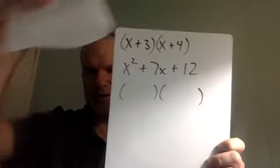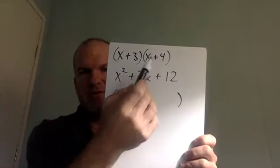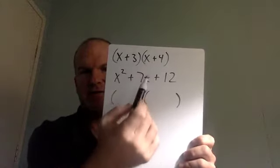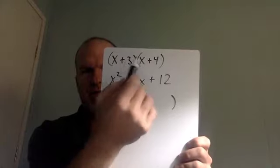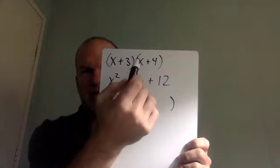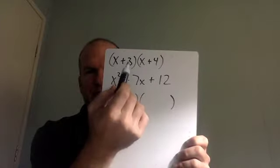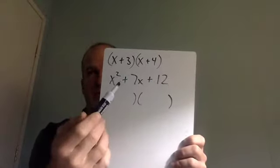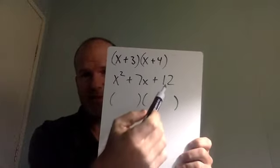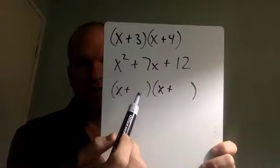To do that, there's a trick. The numbers 3 and 4 are significant: they add together to give the middle term — 3 plus 4 is 7 — and 3 times 4 gives 12, the last term. So you're trying to find two numbers that add to give 7 and multiply to give 12. That's 3 and 4. The key is they add to give the middle term and multiply to give the third term.